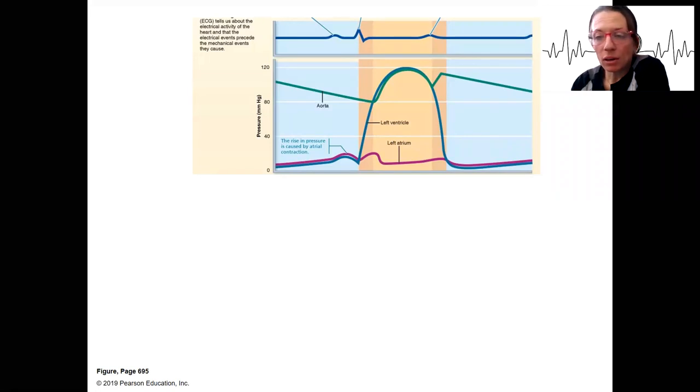Another image of the Wiggers diagram showing these changes in pressure over time throughout the cardiac cycle. So in the left ventricle, left atrium, and aorta.